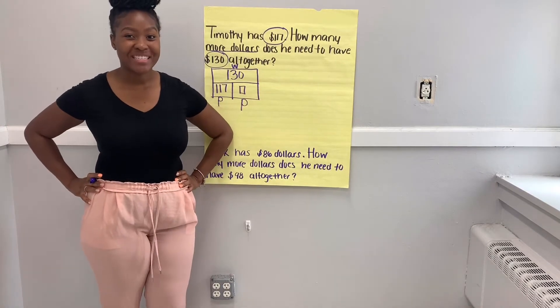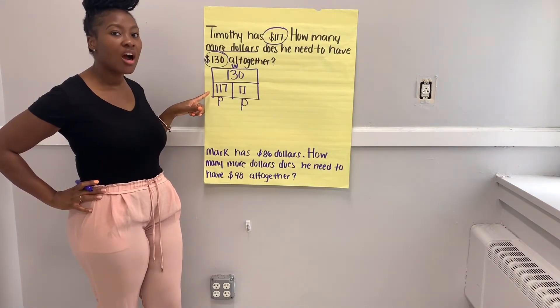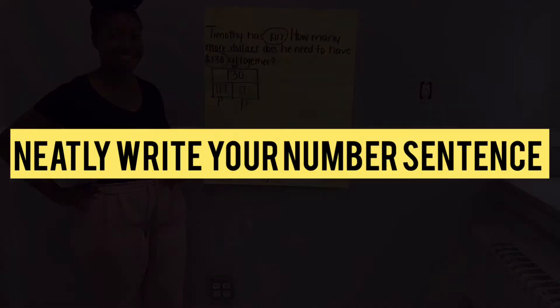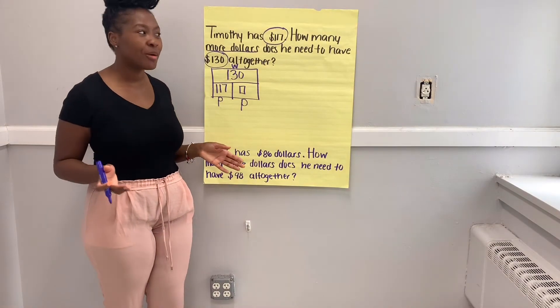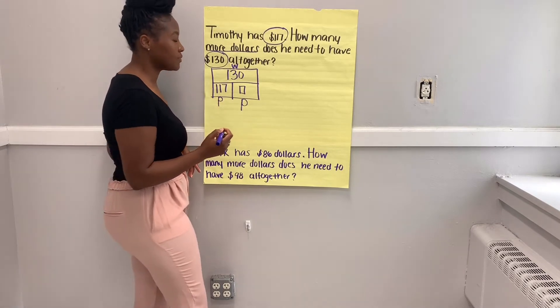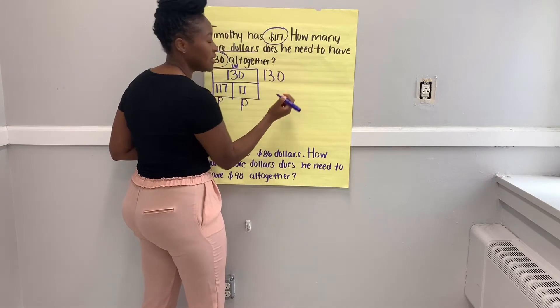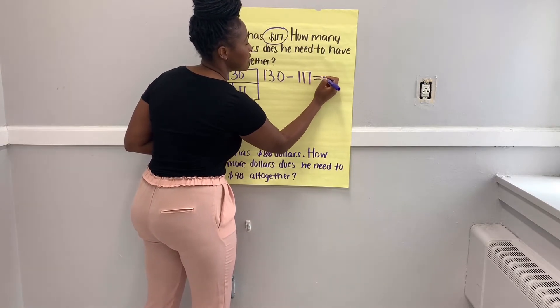Now it's time to write that number sentence. Looking at our part, part, whole box, what number sentence can I write to match it? Go ahead and write your number sentence. What is your number sentence that you wrote to match our story problem from the part, part, whole box? Yes — $130 minus $117 equals our unknown.